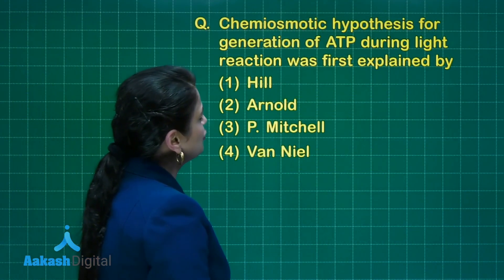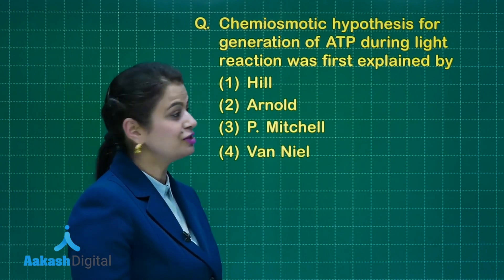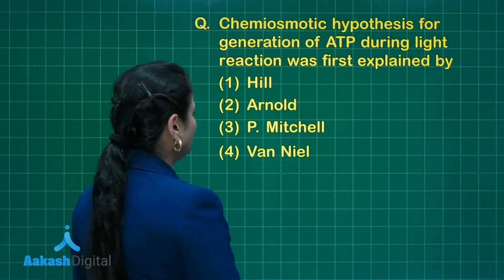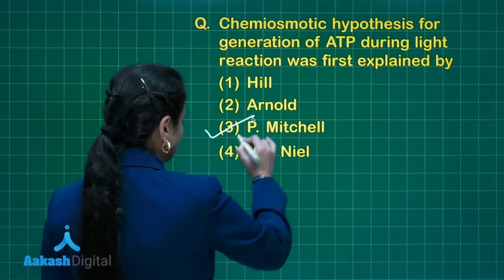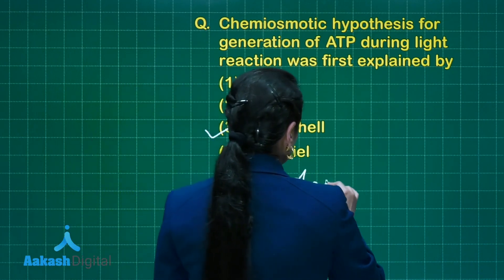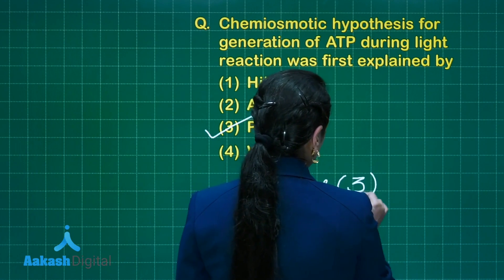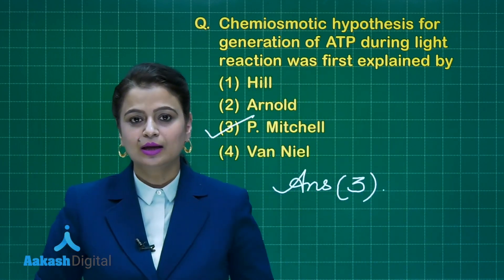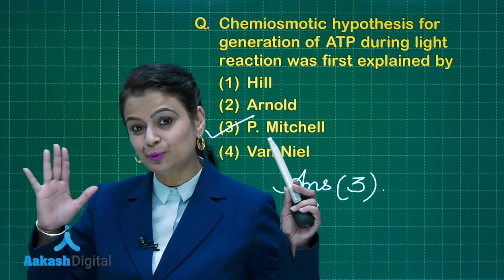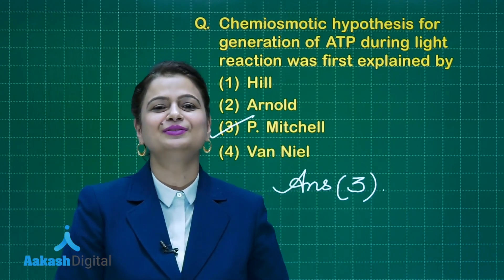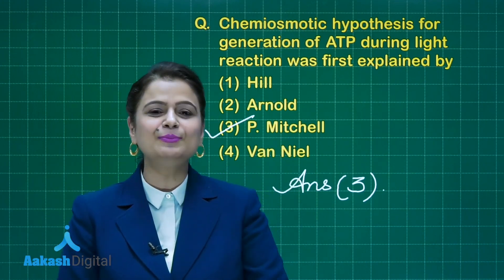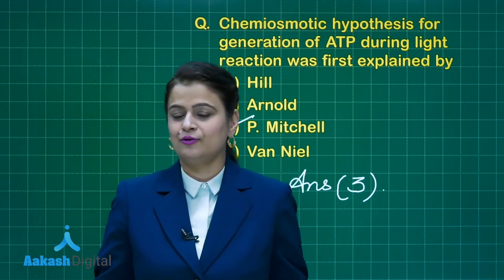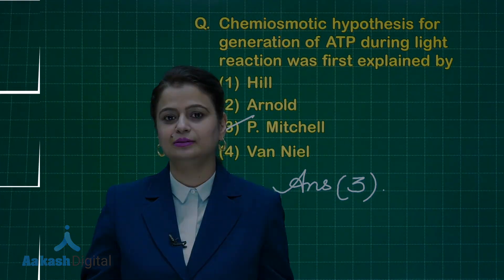A key question: chemiosmotic hypothesis for generation of ATP during the light reaction was first explained by the scientist Mitchell — also called Mitchell's theory. The proton gradient has now been formed. In the next part of this lecture, we will discuss how this proton gradient will be used for synthesis of ATP.